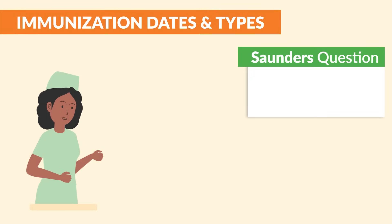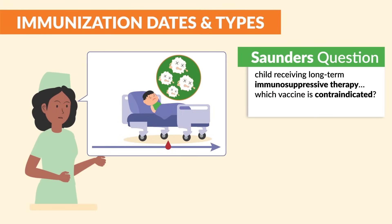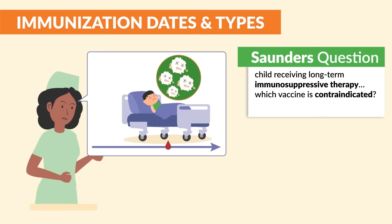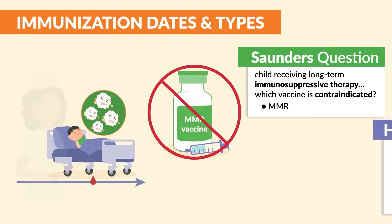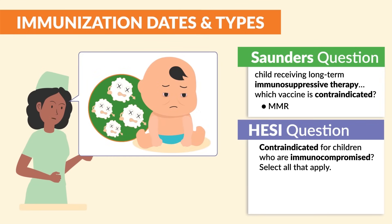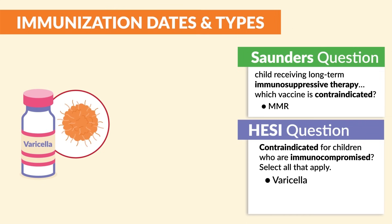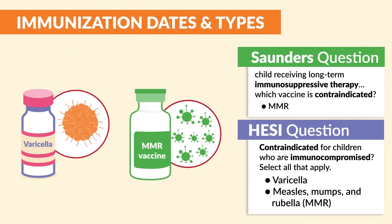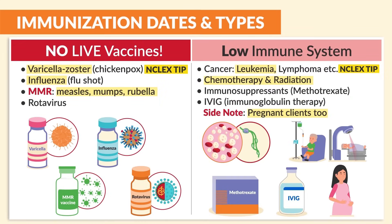Saunders mentions: a child receiving long-term immunosuppressive therapy — which vaccine is contraindicated? MMR. And HESI: contraindicated for children who are immunocompromised, select all that apply — varicella and MMR, the measles, mumps, and rubella. Please be sure to know: no live vaccines for immunocompromised patients.